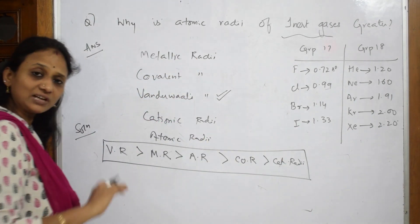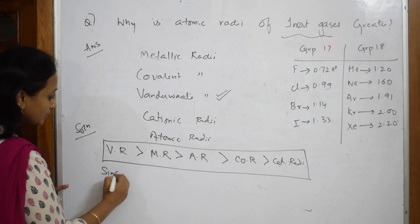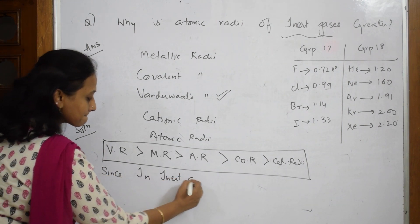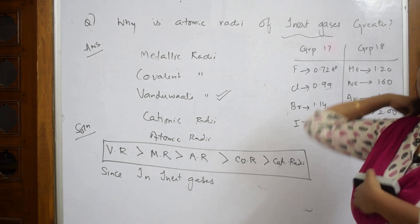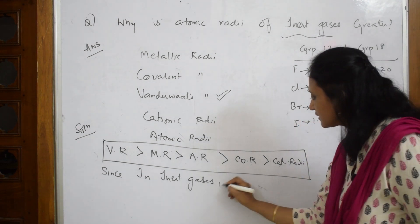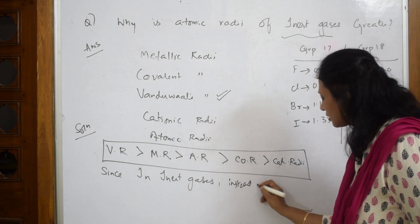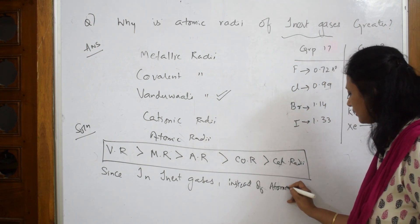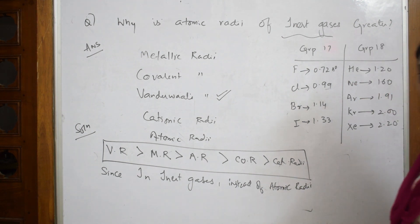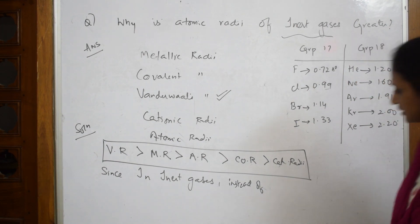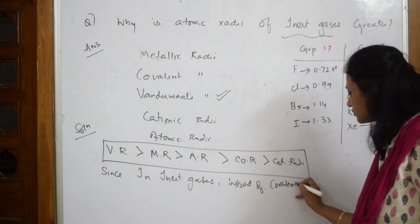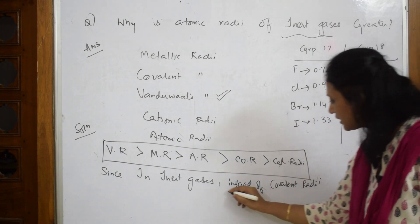You want to write the answer like this: start with the sequence or order. Since in inert gases the electrons are non-bonded, because inert gases don't form bonds, instead of covalent radius, van der Waals radius is taken into consideration.